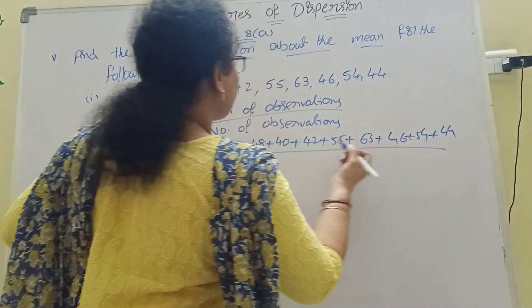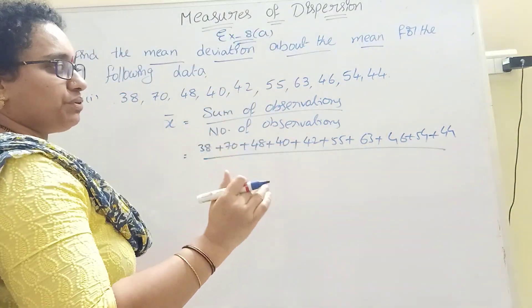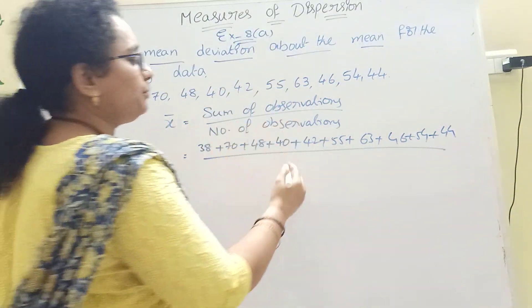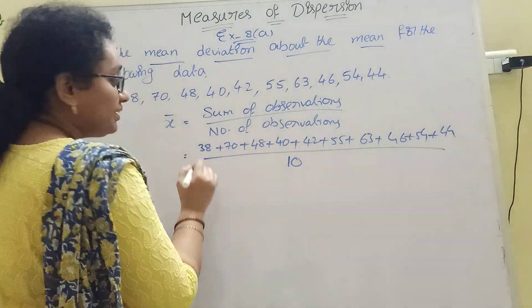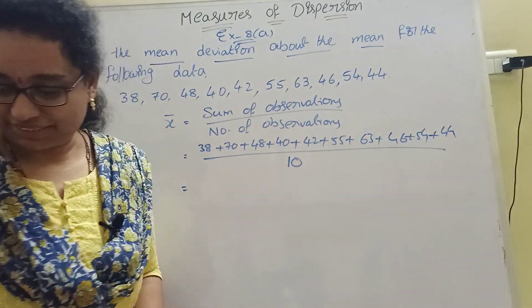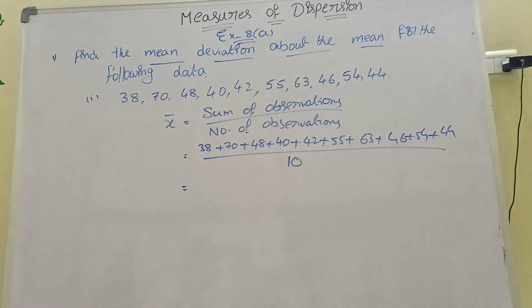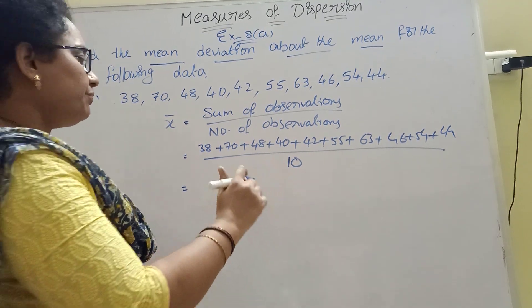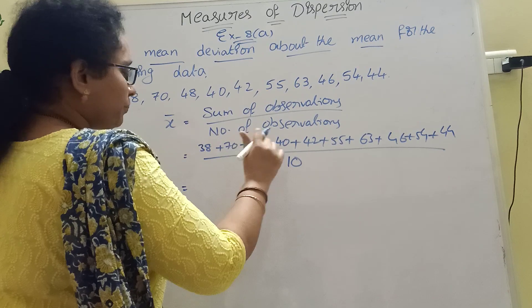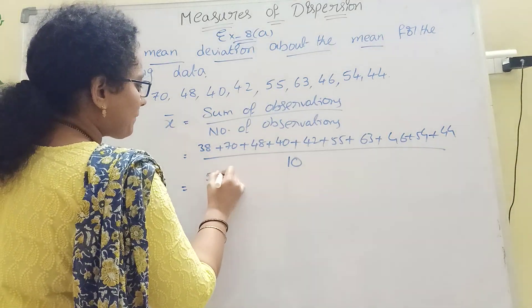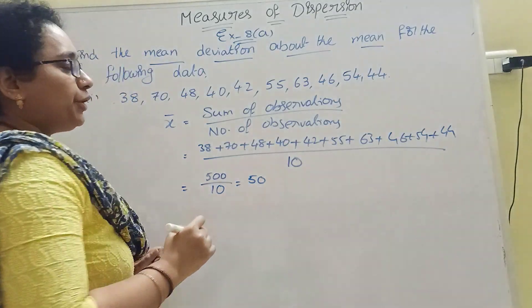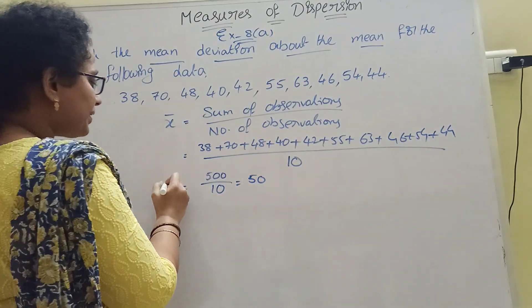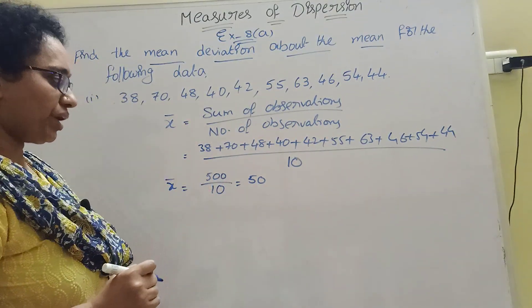This is divided by the number of observations, which is 10. The addition comes to 500, so 500 divided by 10 is 50. So the mean X̄ = 50.